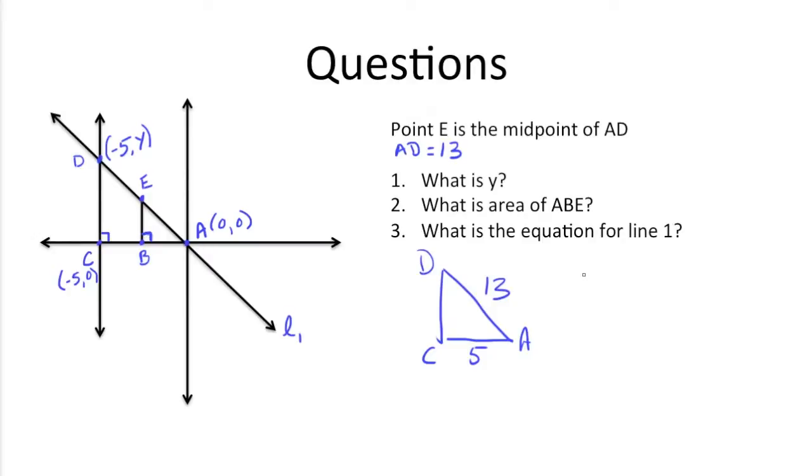A squared, 5 squared 25 plus X squared, say DC is X, is equal to 13 squared, which is 169. X squared is equal to, we need to subtract 25 from both sides and we get 144 and we get X is equal to 12, taking the square root of both sides. So we know DC is 12.